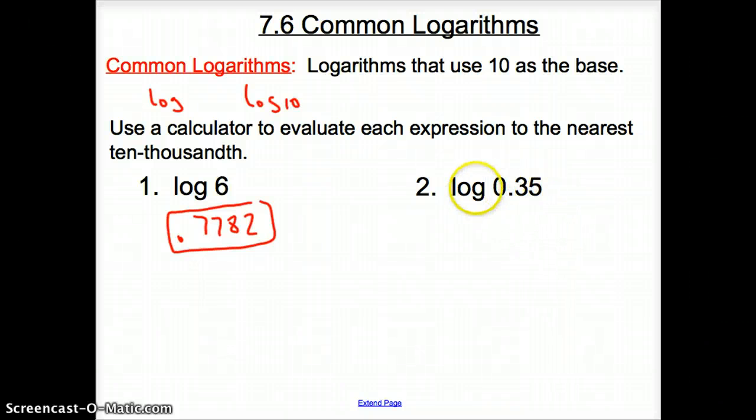Log 0.35 equals negative 0.4559. Both of those are evaluated.